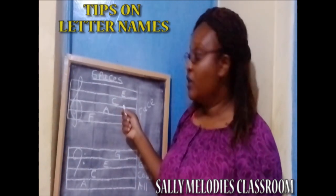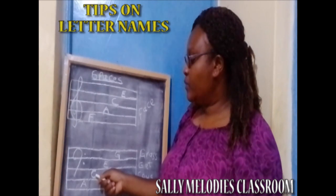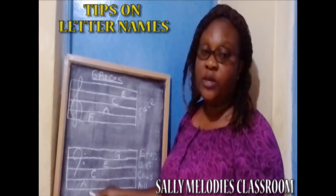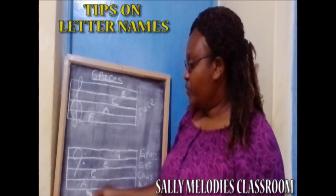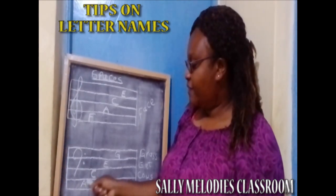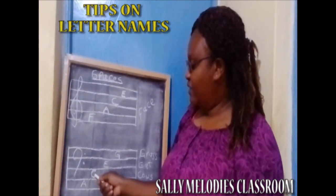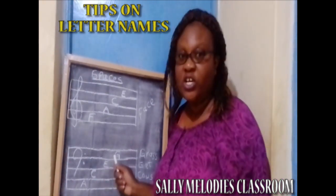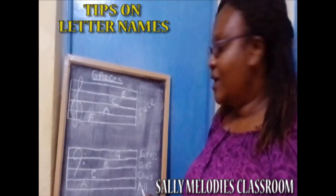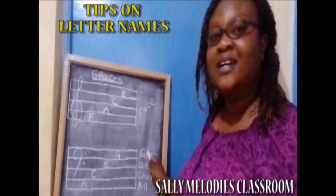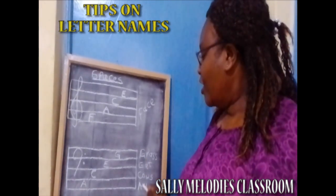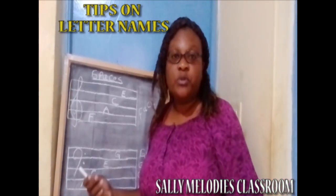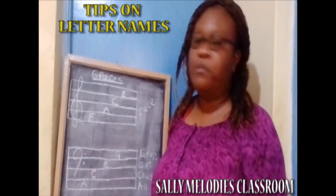When we come down to the bass clef, or F clef, we also have the same thing. We have our first space as an A, the second one as a C, the third one as an E, and the fourth one as a G. So what do we say? We say: all cows eat grass. If you get such simple tips, it will be very easy to name the lines and spaces.